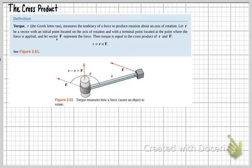Torque τ measures the tendency of a force to produce rotation about an axis of rotation. Let R be the vector with initial point located on the axis of rotation and terminal point located at the point where the force is applied. Let vector F represent the force. Then torque equals the cross product of R and F: τ = R × F. That's essentially how we find the torque.